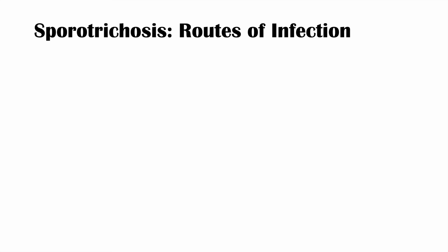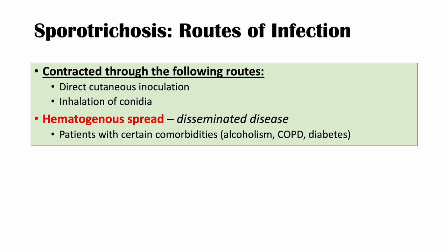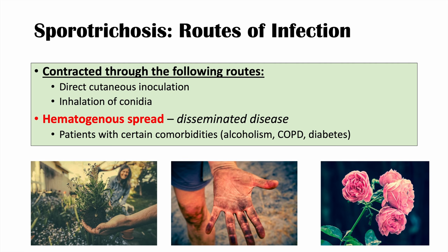The routes of infection of this fungus include: direct cutaneous inoculation — so if you have a cut and the spores of the fungus get into that cut, that is a direct cutaneous inoculation. There's also the possibility of inhaling the conidia, getting the infection into your lungs. And then there's hematogenous spread, meaning it spreads from one location to another through the blood. Hematogenous spread leads to disseminated disease and is more likely in patients with comorbidities like alcoholism, COPD, and diabetes.